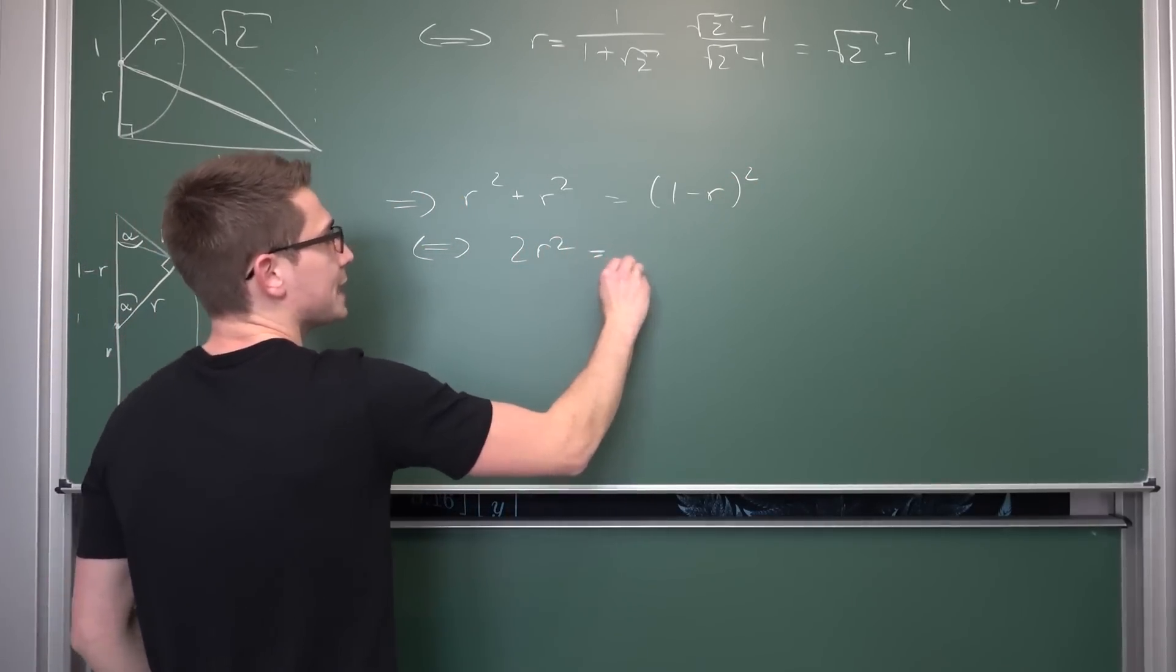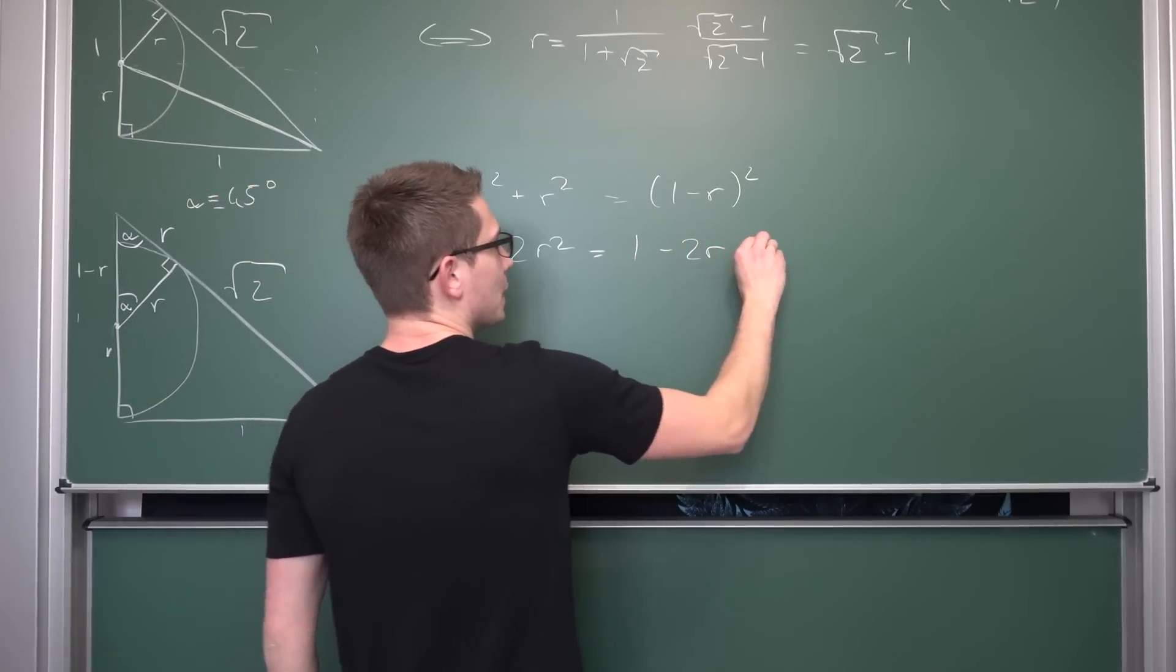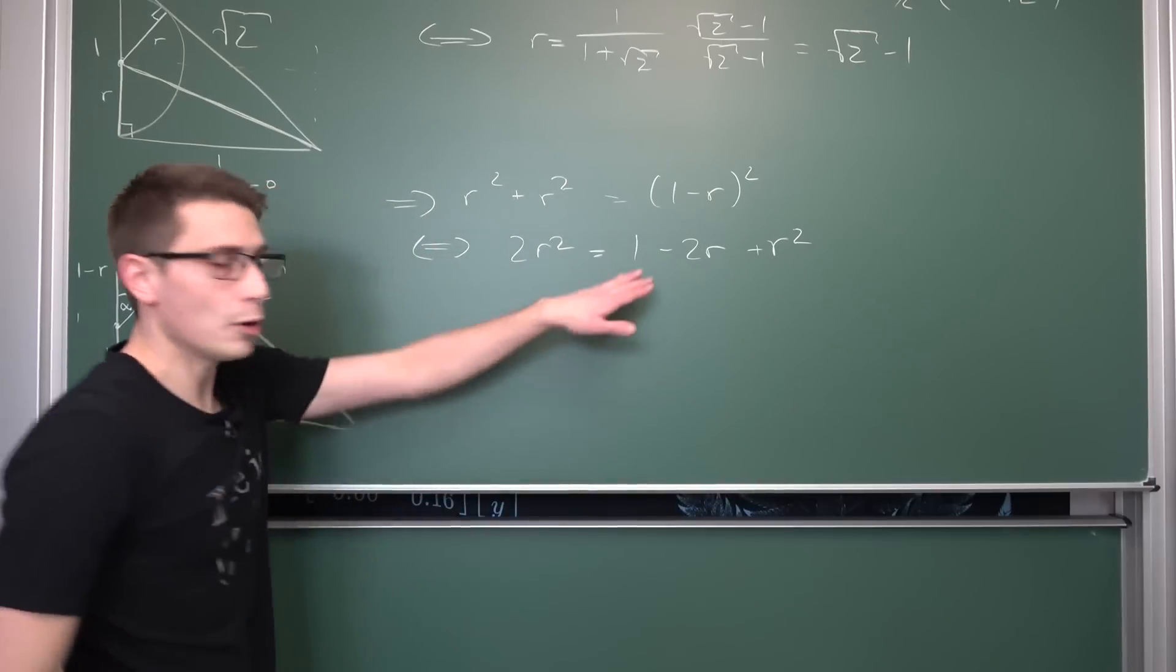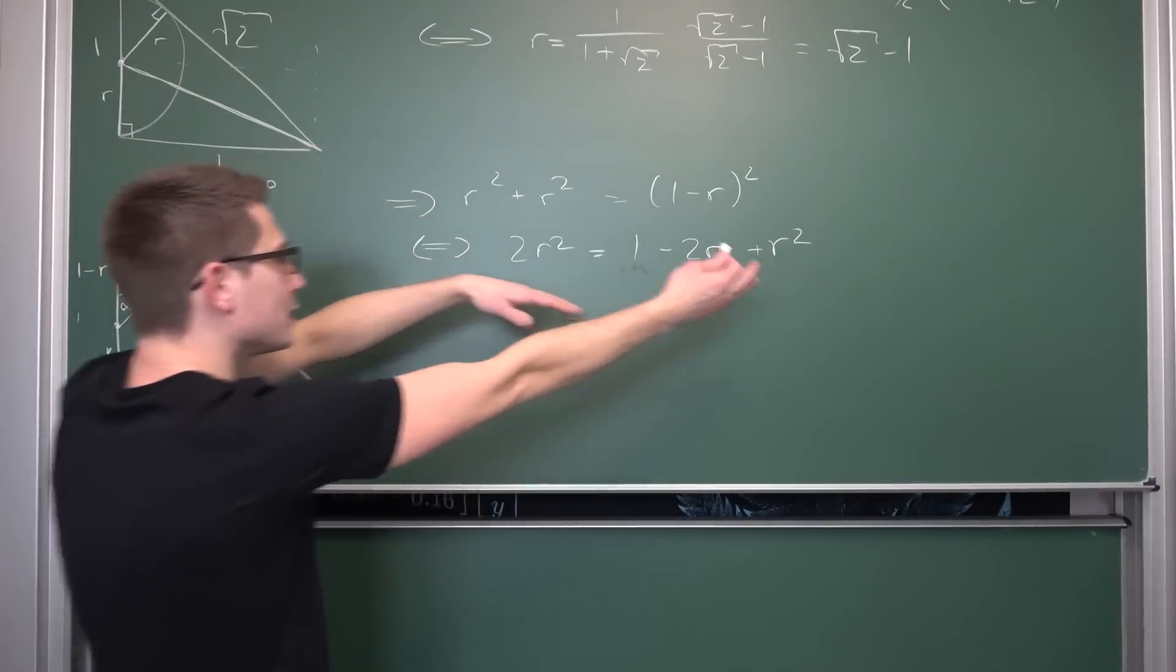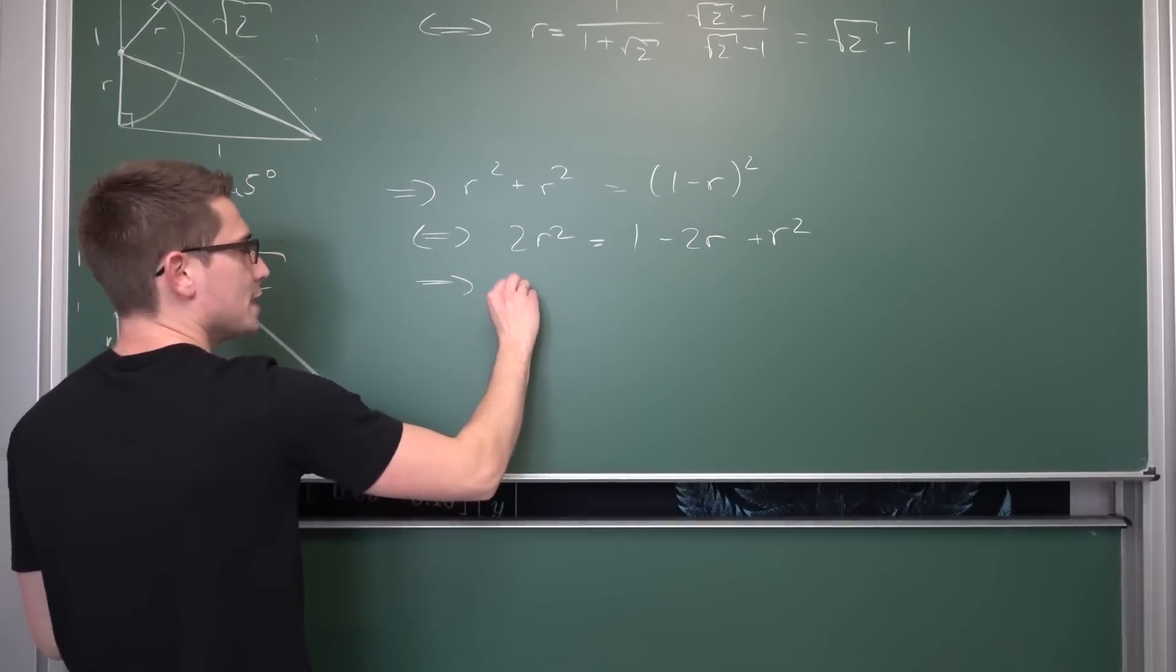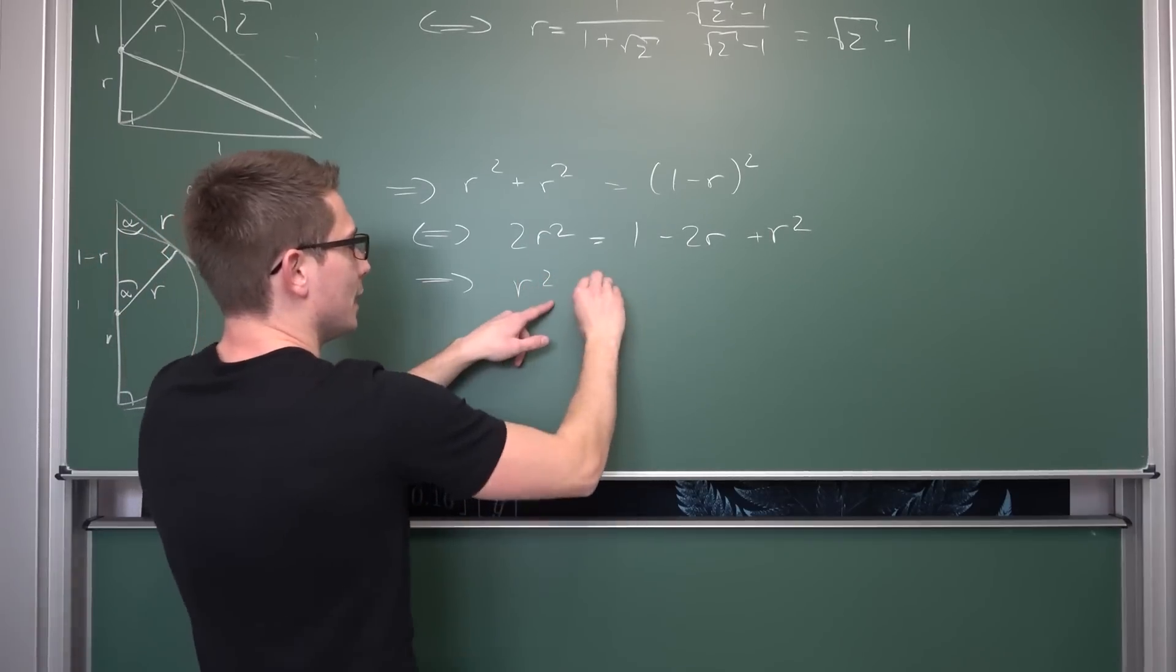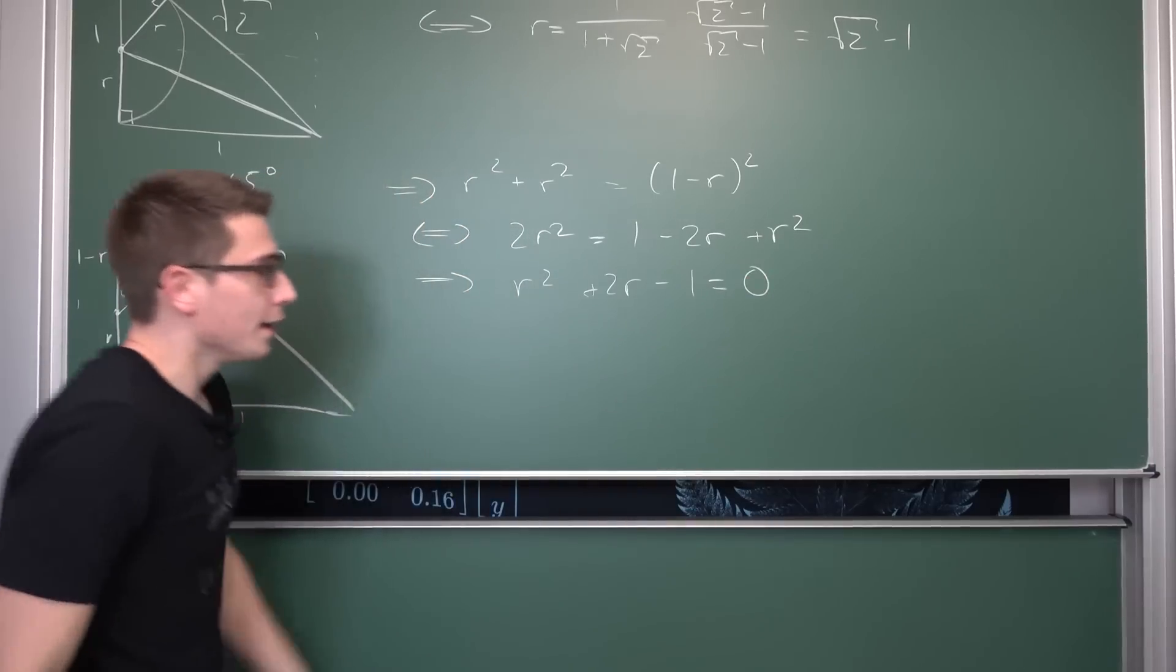So meaning what we are going to do, we are going to get r squared plus r squared as being the opposite and adjacent of those angles, being equal to 1 minus r squared. So that overall is equivalent to saying we have 2r squared being hence nothing but, we are going to get 1 minus 2r and then plus r squared. And now we can just solve for r basically. Let's bring everything to the one side and 0 on the other side. Meaning we are going to subtract r squared on both sides, giving us r squared and then plus 2r and then minus 1 is hence nothing but 0.